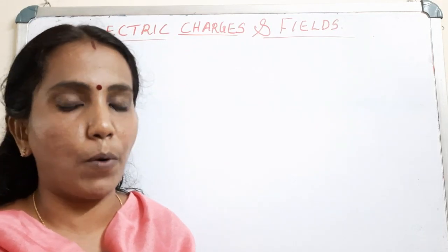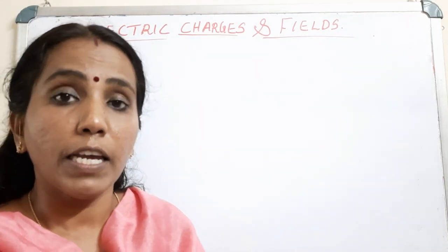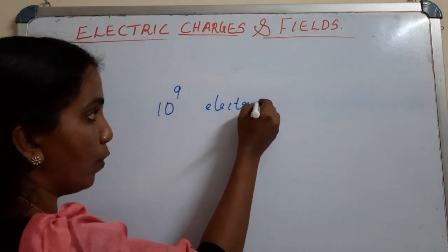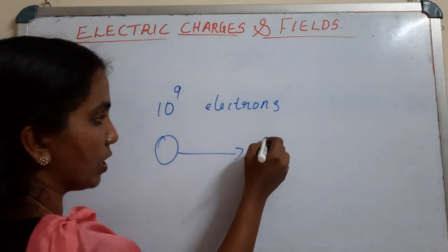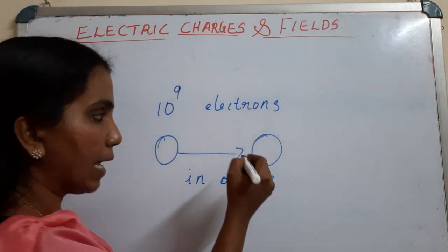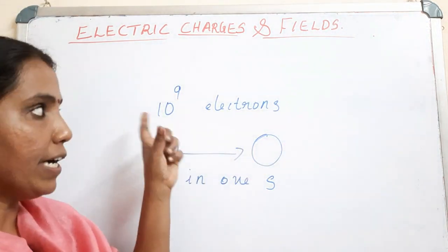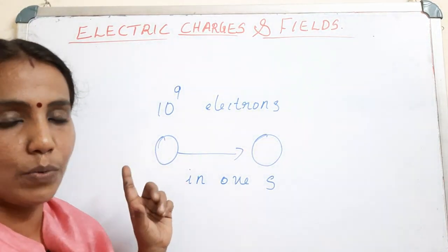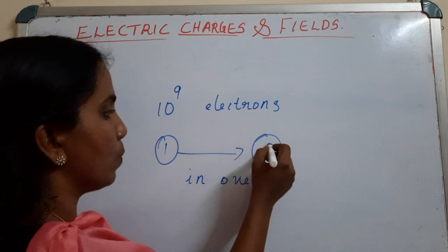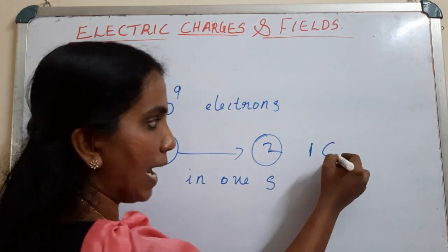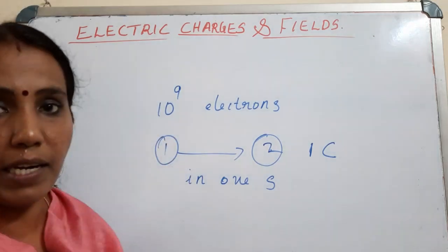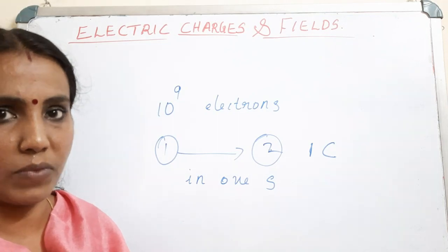Now coming to the second problem. It is given that 10 raised to 9 electrons flow from one body to another body in one second. The question is: how much time does it take for the second body to gain a charge of 1 coulomb, if 10 raised to 9 electrons are being transferred per second?